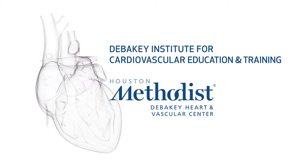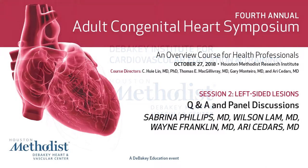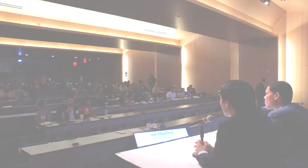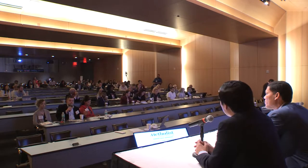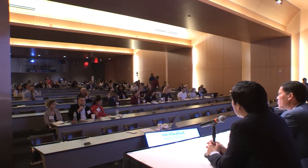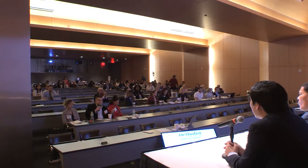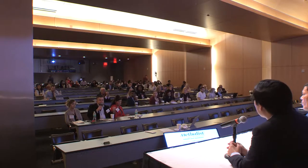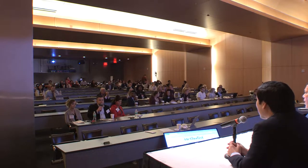I have a question for the cor triatriatum. Is the partial anomalous pulmonary venous return part of the anatomy of the septal wall placement, or more in the actual development of the pulmonary veins in their return? Is there a certain type of PAPVR that is more associated with cor triatriatum?